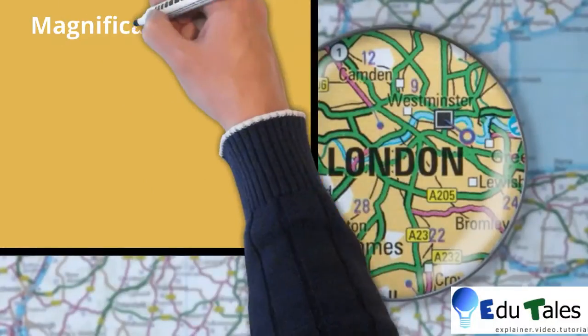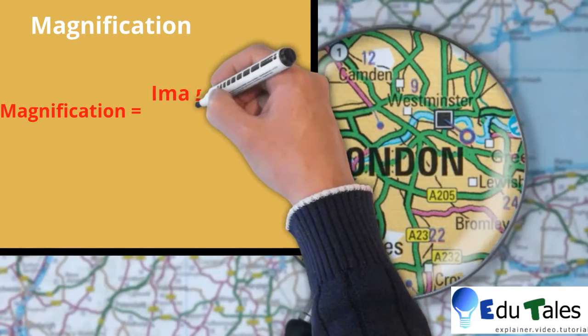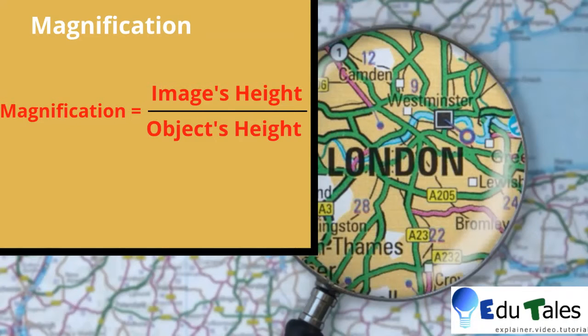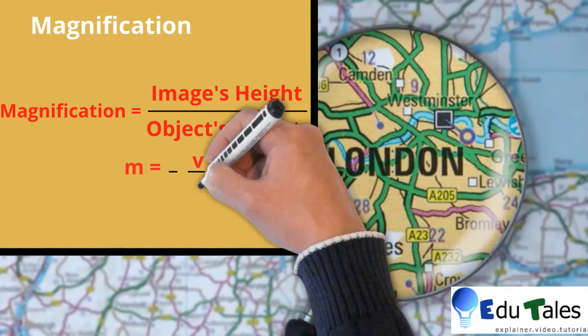Magnification is the ratio of height of the image to the height of the object. Magnification can also be written as m = -v/u.